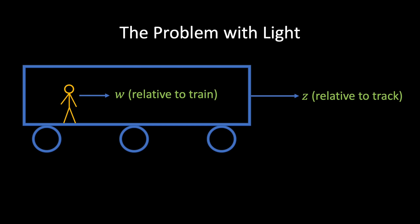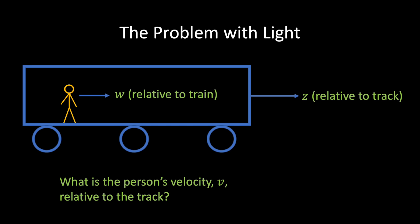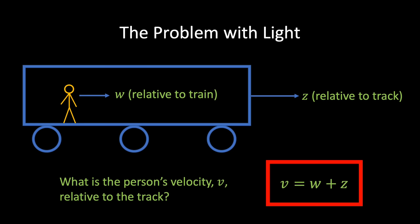We therefore assume that the laws of physics are the same in all inertial frames of reference — frames that move at a constant speed relative to one another. Suppose a train is travelling along a track with constant velocity z, and a person on the train is walking in the direction of travel with velocity w relative to the train. Their velocity v relative to the track is simply w plus z metres per second. This is referred to as the Galilean addition of velocities.